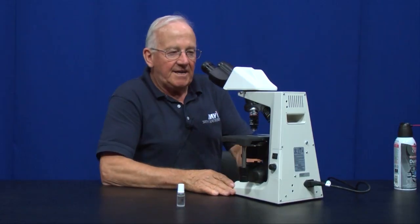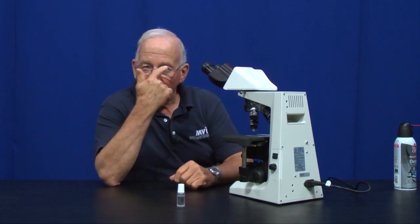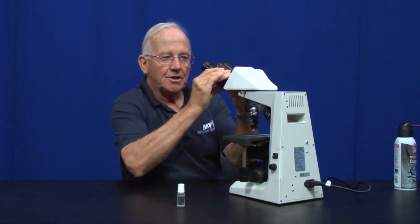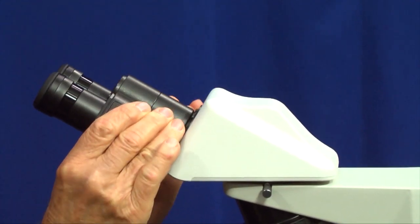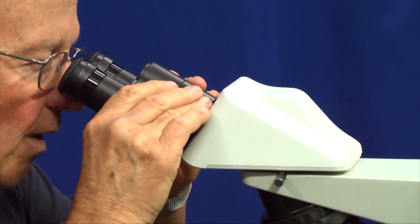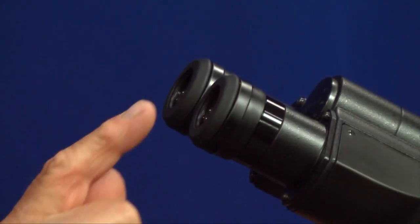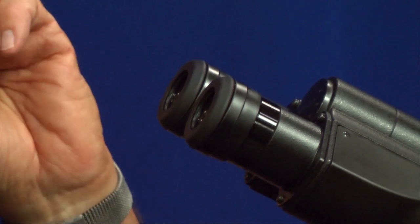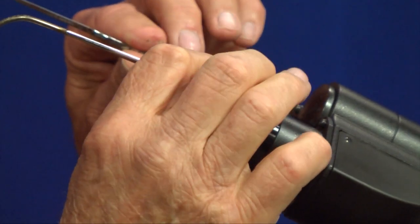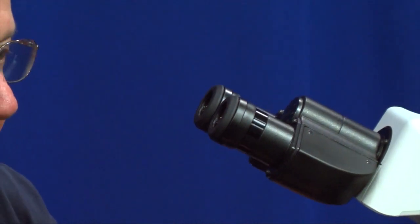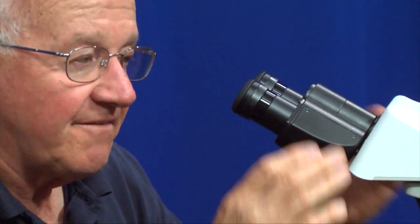To adjust your interpupillary distance on the binocular body, how far apart your pupils are, you simply grab each half of the binocular body and rotate it like so until it's very comfortable that you see one image of the specimen. One nice thing about these eyepieces is that they're called high eye point eyepieces. They make the image formed about a half an inch out of the eyepiece, and that means you can accommodate spectacle wearers, eyeglass wearers. I can wear my glasses very nicely, and we have coated the top of the eyepiece with a rubberized material so you won't scratch your glasses. That's a very nice feature.